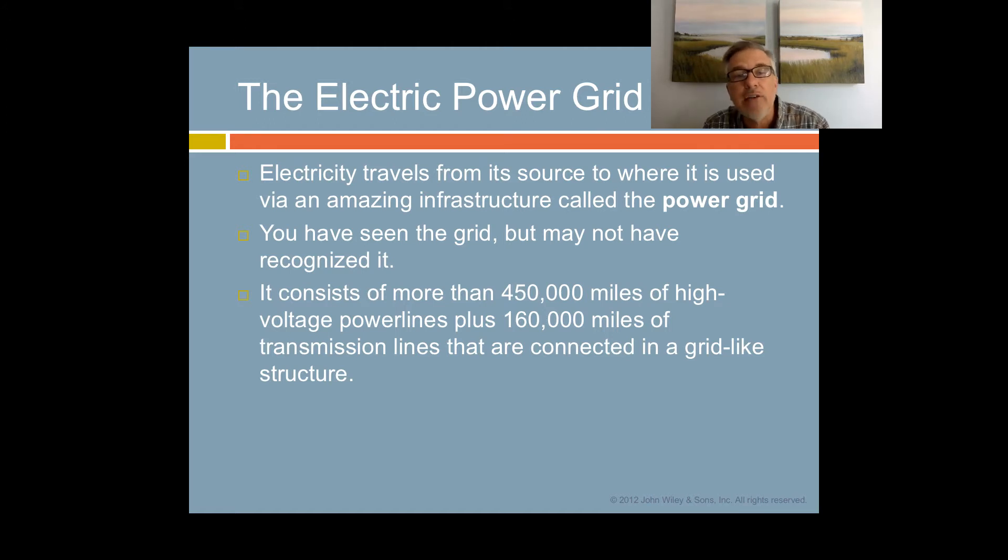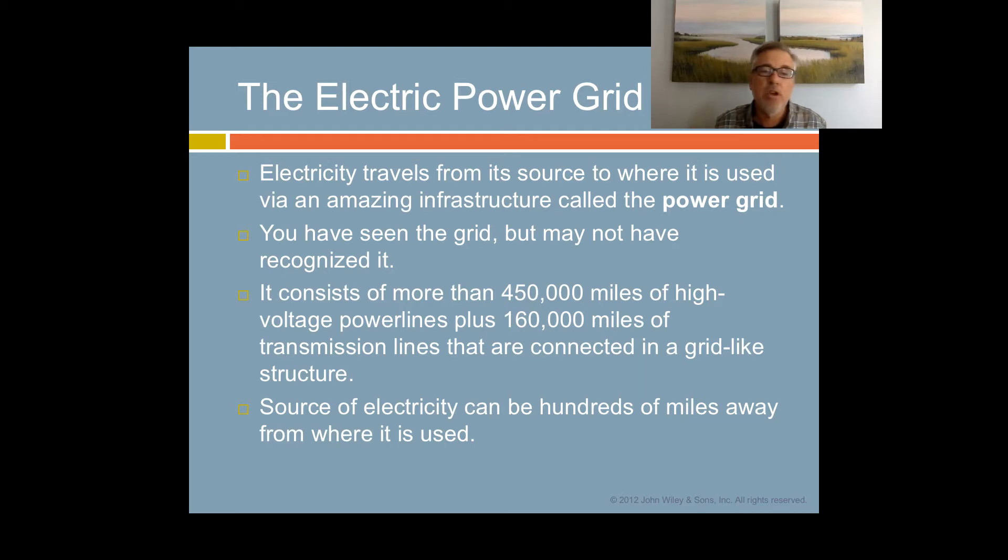In the United States, it consists of more than 450,000 miles of high voltage power lines plus another 160,000 miles of local transmission lines. They are connected in a grid-like structure. That means there is not a single path, but a net or grid-like structure. As a result, the source of electricity can be hundreds of miles away from where it is used. That's great, but it can also cause problems, such as when the pollution problems are in one community and the usage is far away where nobody really realizes the damage caused by the pollutants.